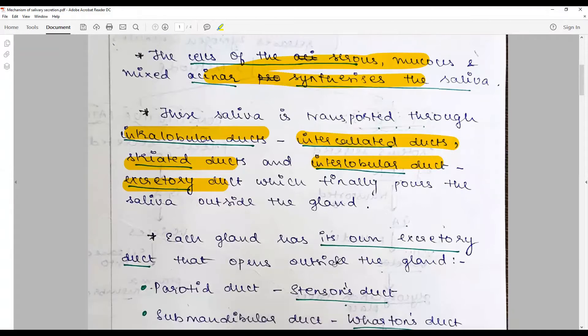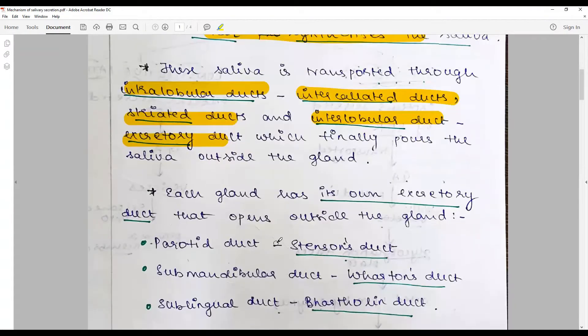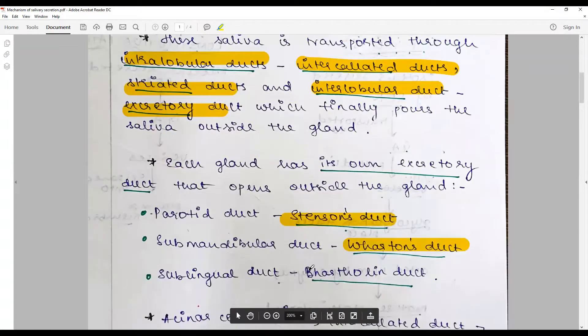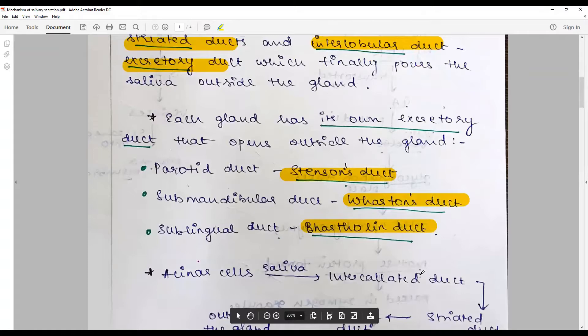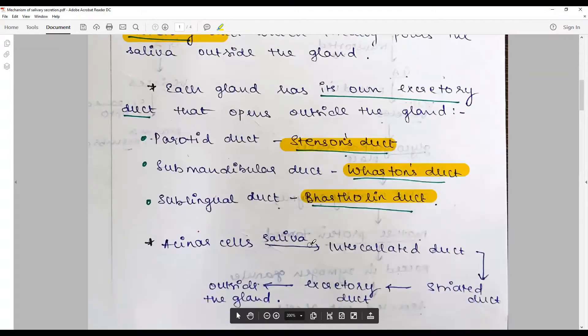Each gland has its own excretory duct that opens outside the gland. The parotid duct is known as Stenson's duct, the submandibular duct is known as Wharton's duct, and the sublingual duct is known as Bartholin's duct.